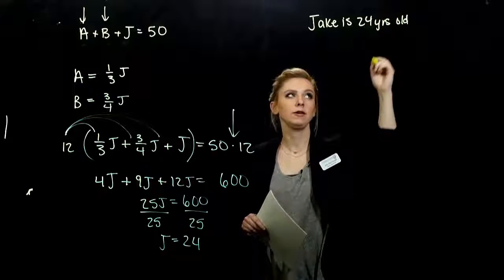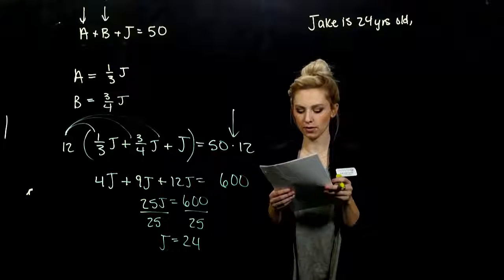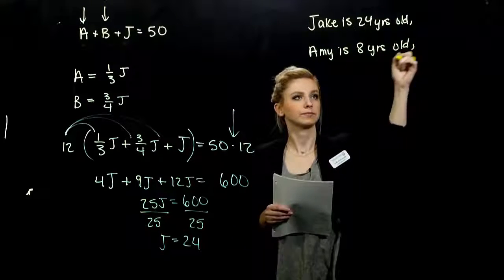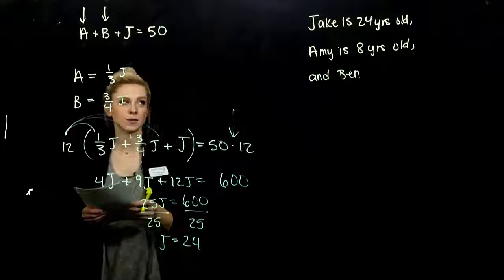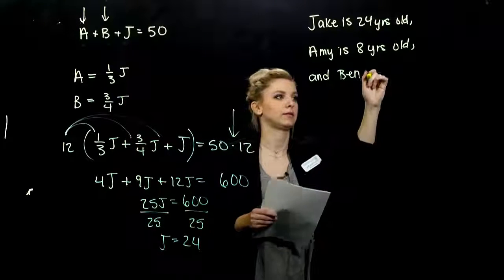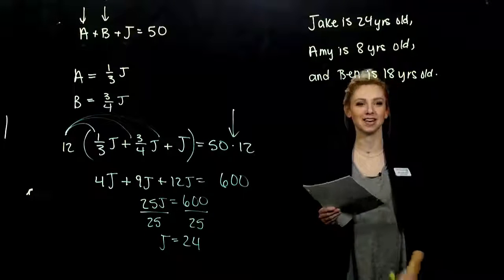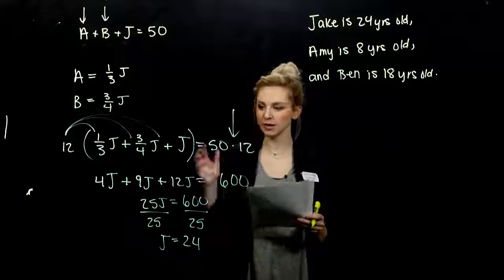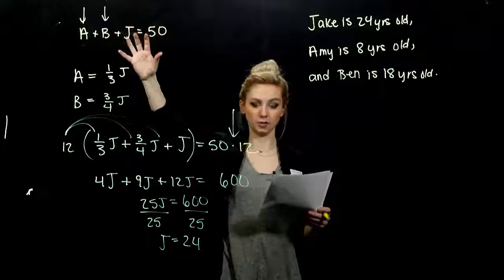And we want to put units on it. What about Amy? She is one-third of Jake's age. So twenty-four divided by three gives me eight. Amy is eight years old. And Ben is three-fourths the age of Jake. Twenty-four divided by four gives us six. Six times three gives me eighteen. It's kind of creepy that an eighteen and twenty-four year old are hanging out with an eight-year-old girl. But maybe they're cousins. We'll just put them in the same family and it's not weird anymore. We have to recognize, what relationship do we have? I want to write the unknowns all in terms of one variable so we can solve.